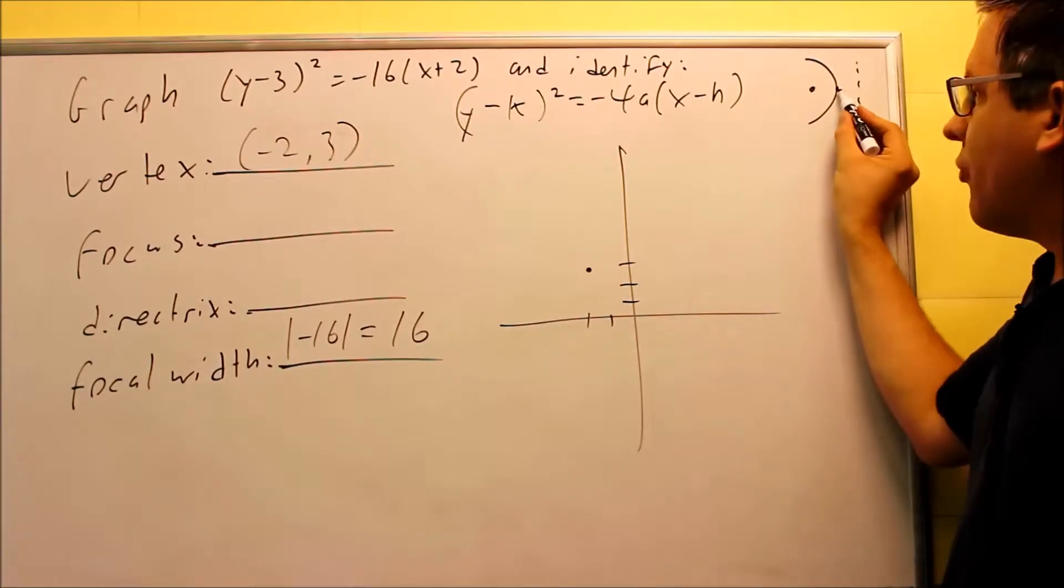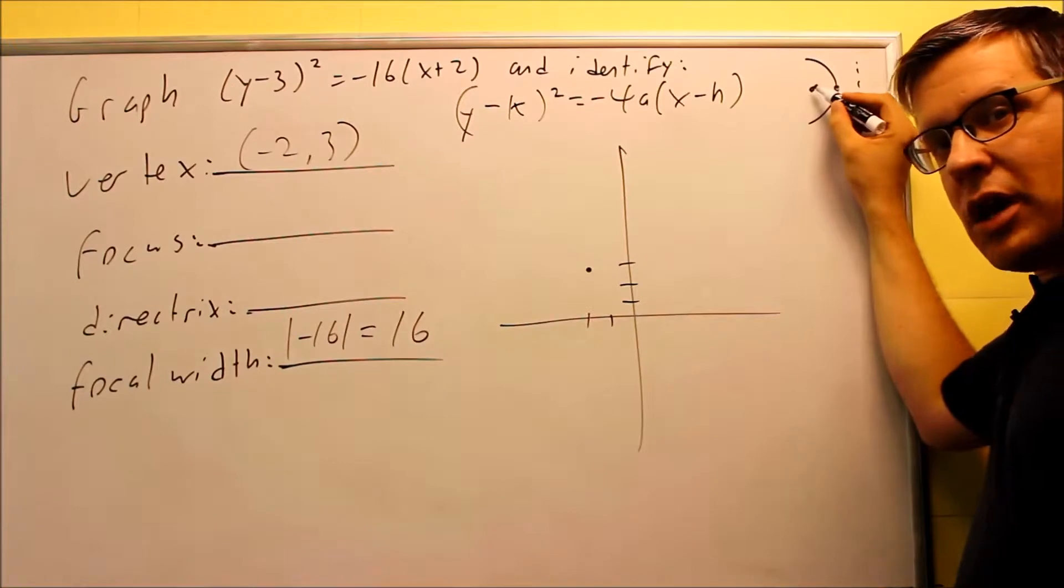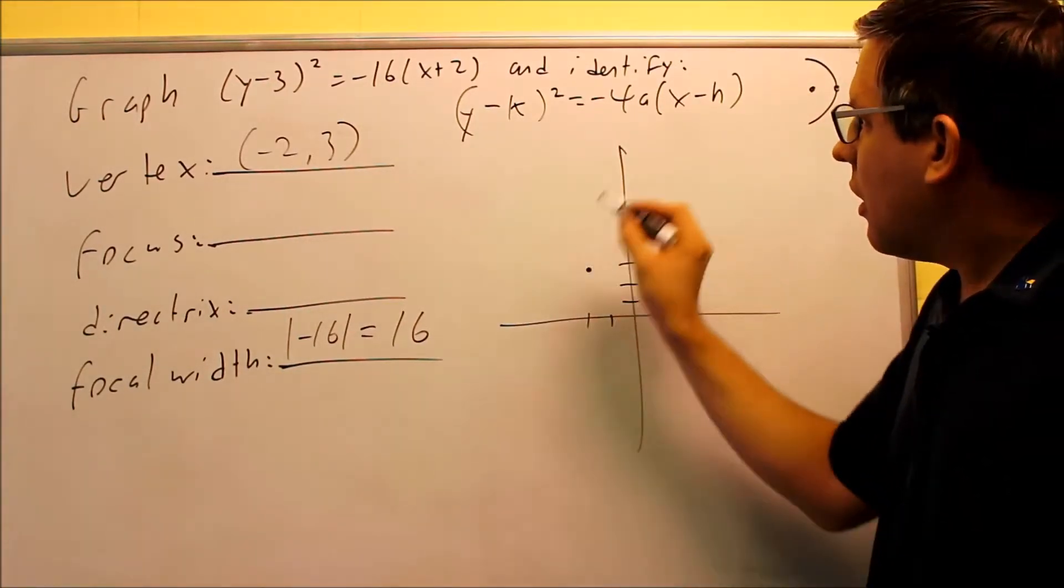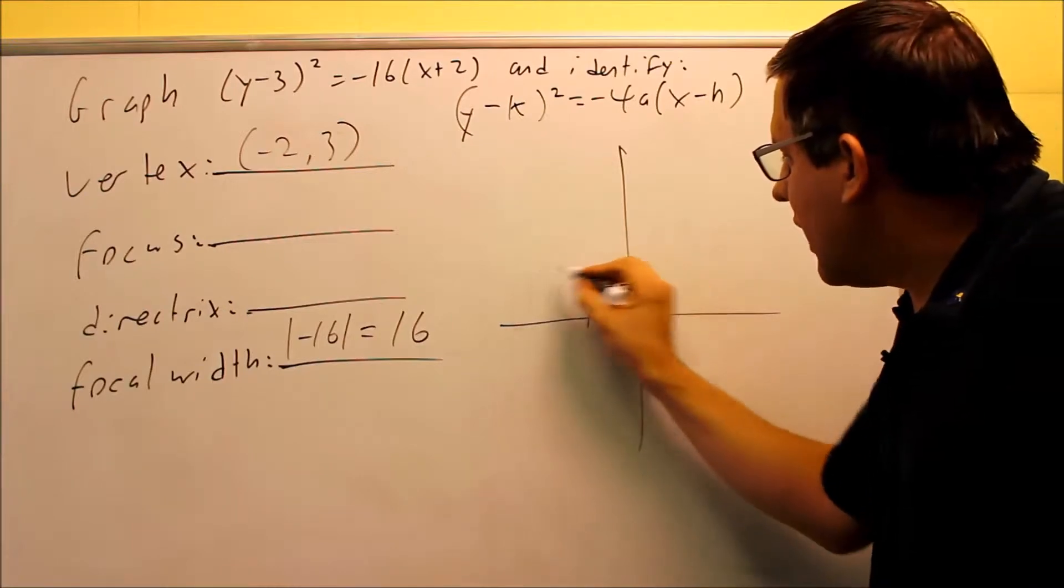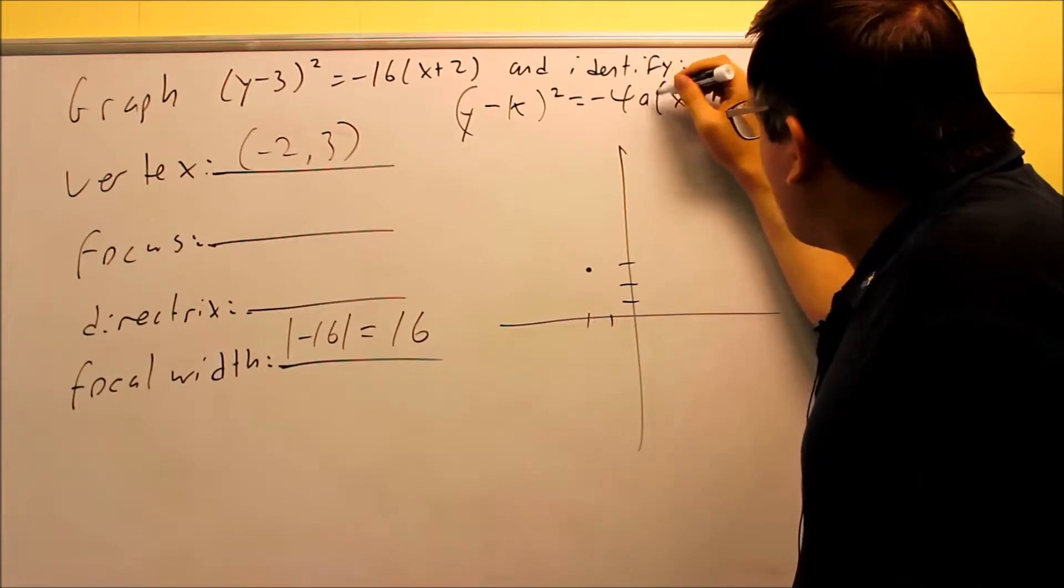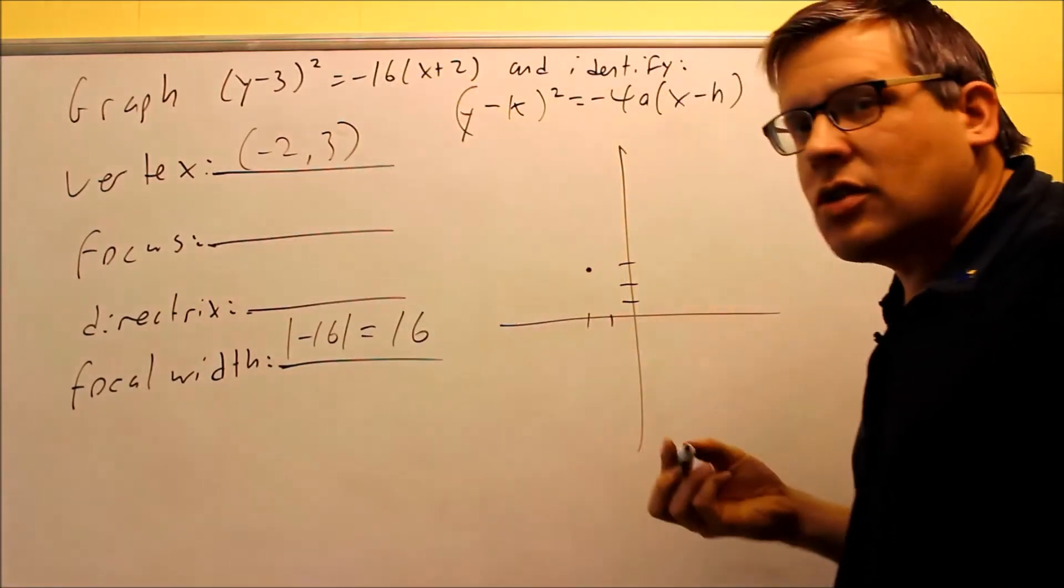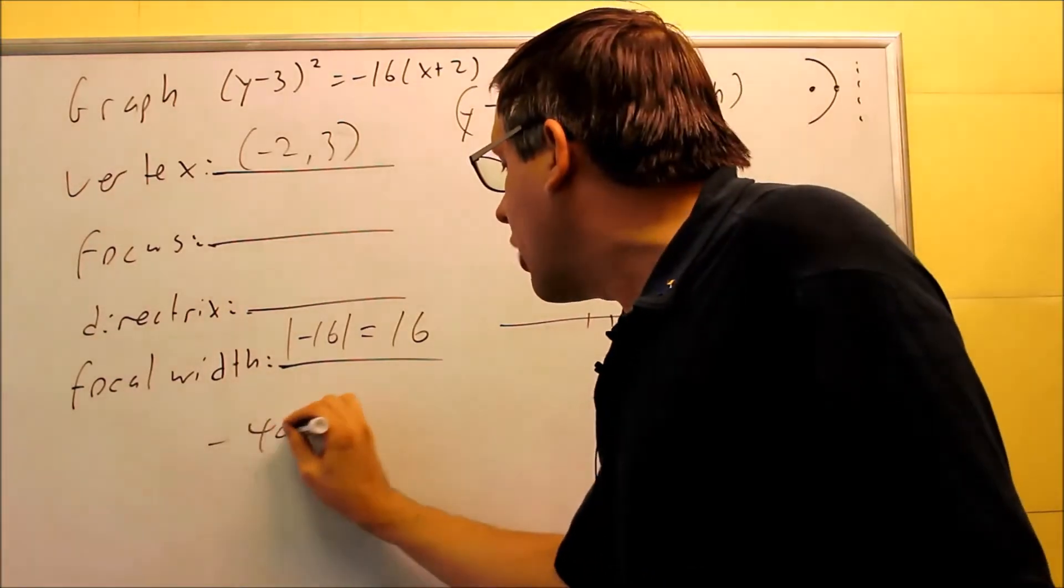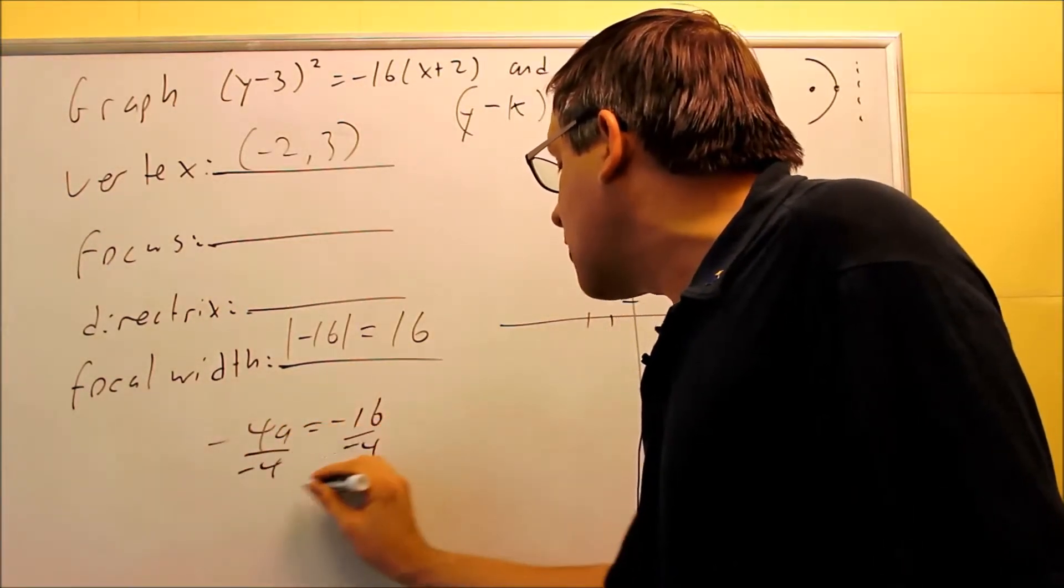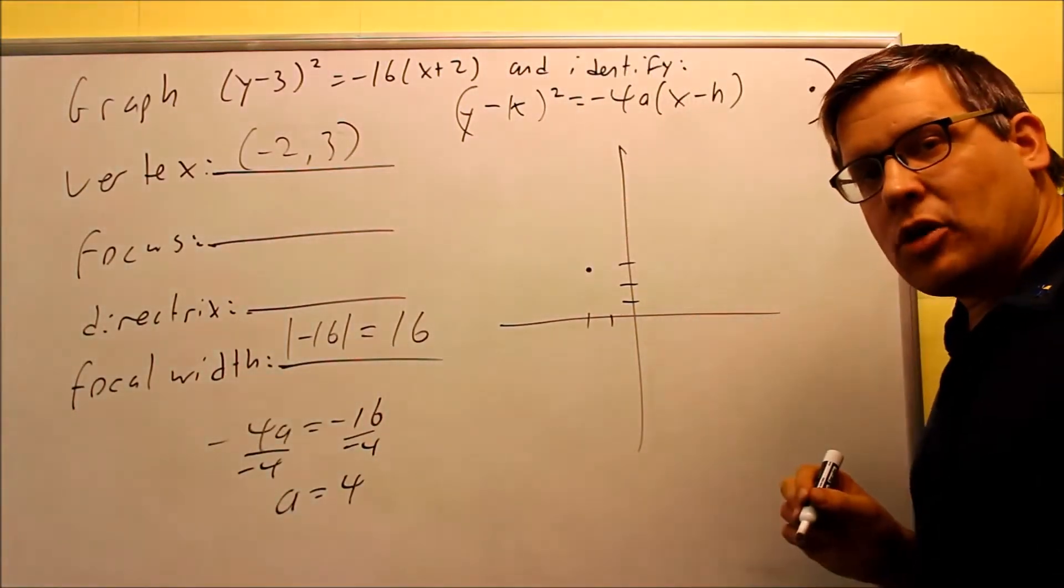This model says that from my vertex, which is right here, I need to go to the left in the amount of a, and then go to the right in the amount of a. So from here, I'm going to go to the left a and to the right a. Now I have to find the a value here. In this case, I have negative 4. I'm going to have that set equal to the negative 16 that's in the formula itself. So I have negative 4a equals negative 16. And if I divide both sides by negative 4, I get a is 4. Remember, a should always be positive no matter what.